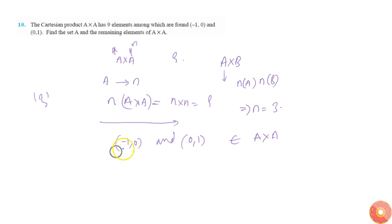From this we can say that all the first elements belong to first set. So minus 1 comma 0 belongs to A, and similarly 0 comma 1 belongs to second set which is again A. From this we get 2 elements of set A.